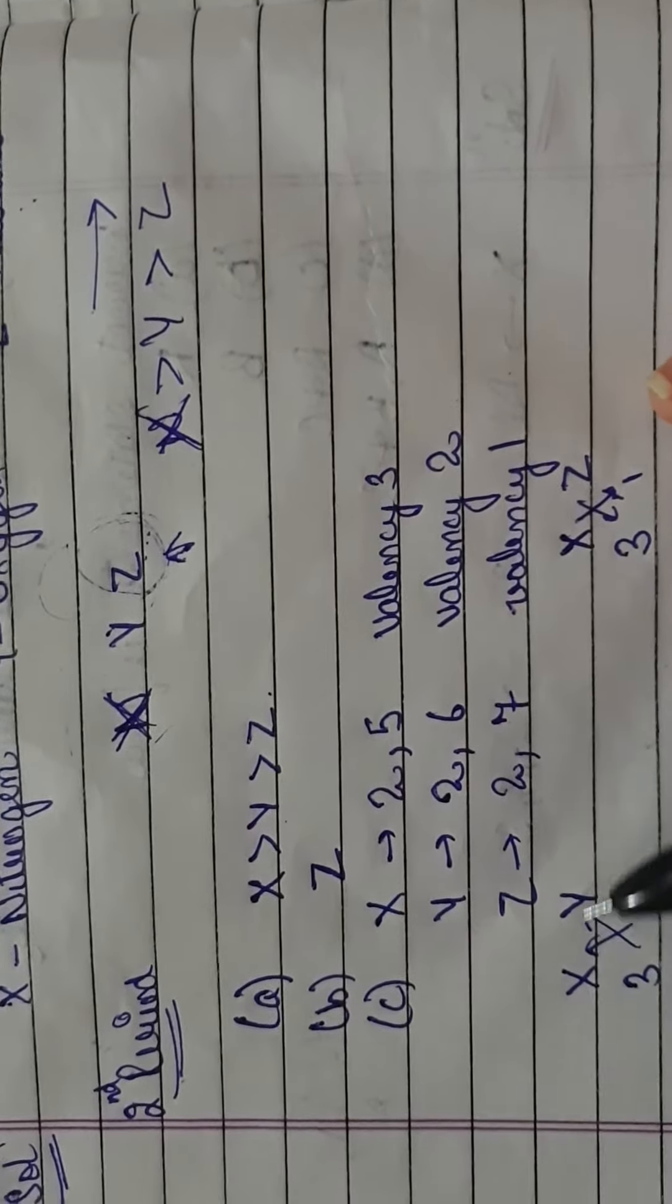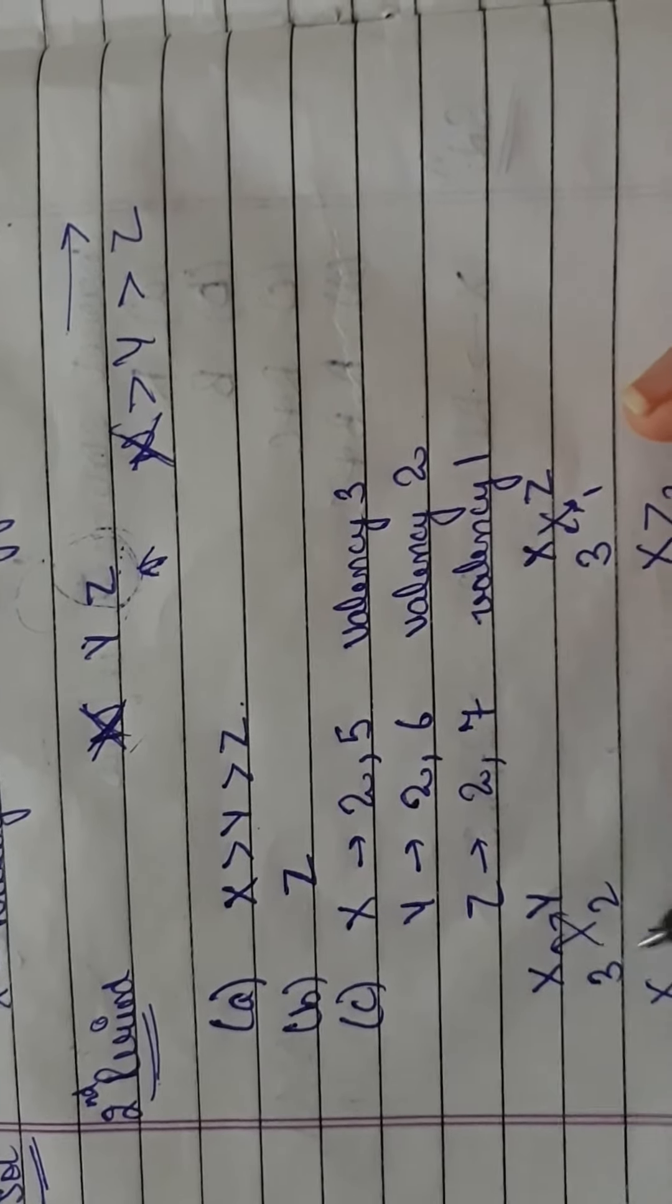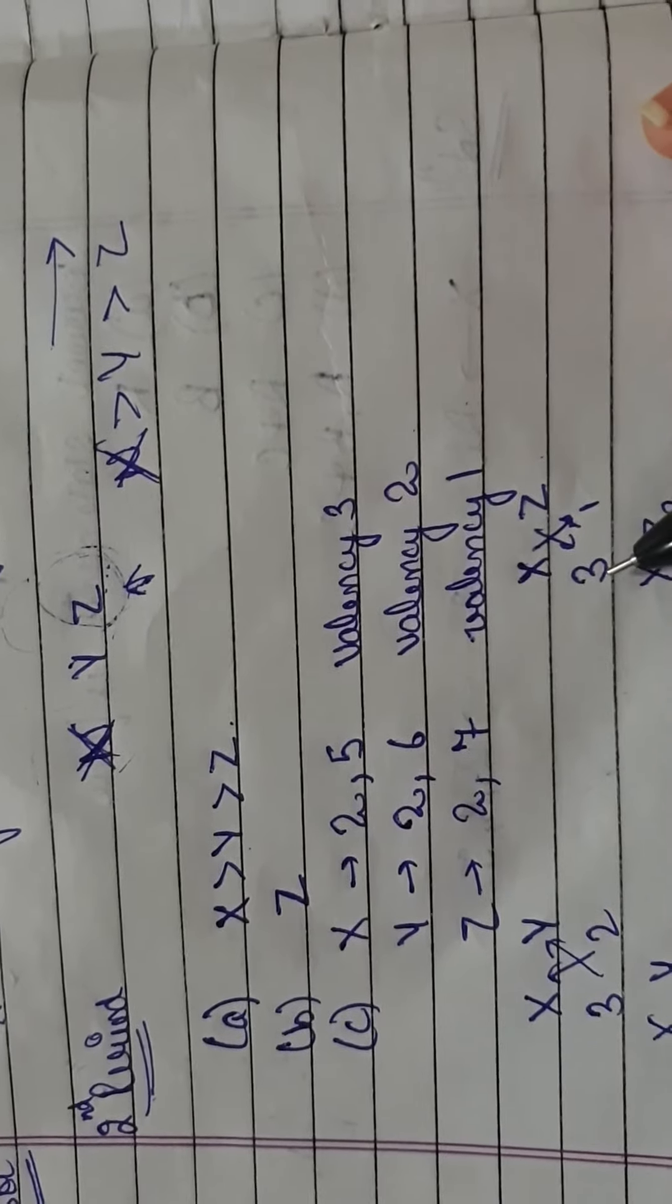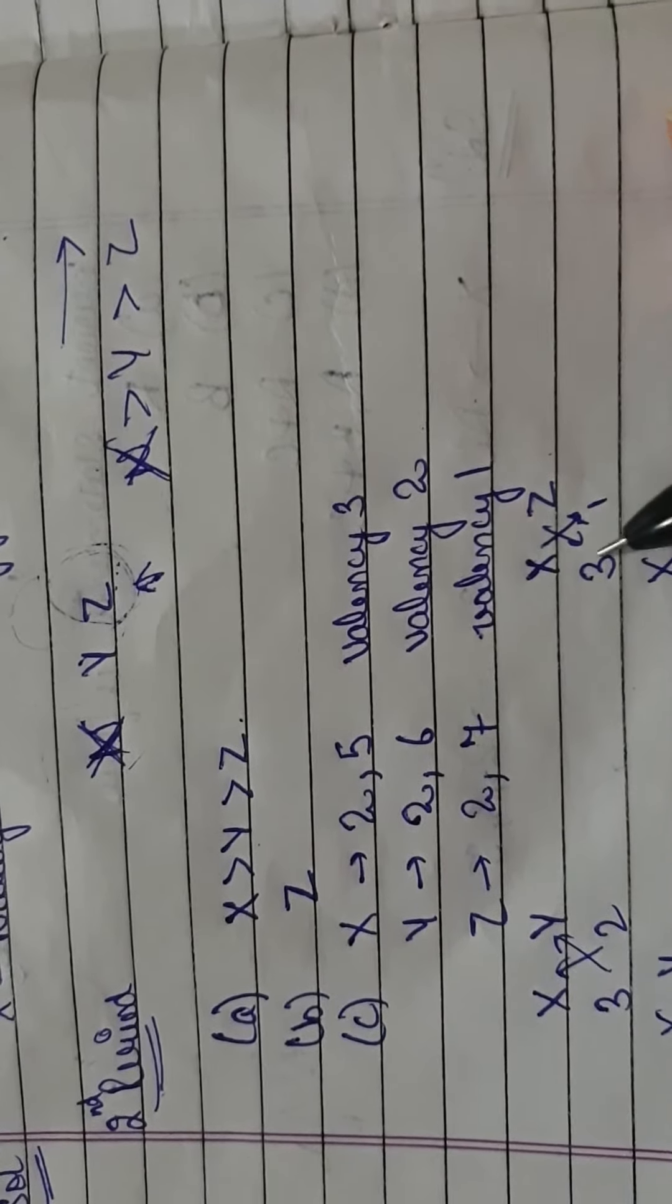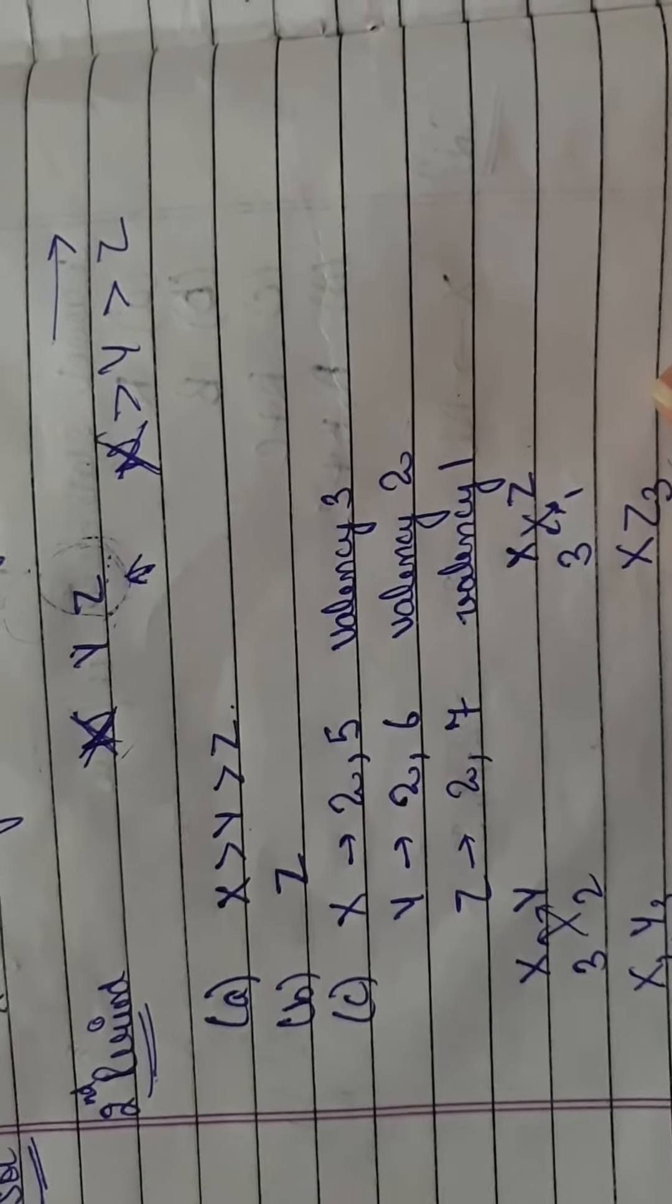For XY compound, X has valency 3 and Y has 2, so the compound will be X₂Y₃. For XZ compound, X has valency 3 and Z has 1, so it will be XZ₃. These are the two compounds.